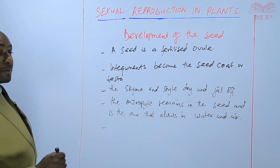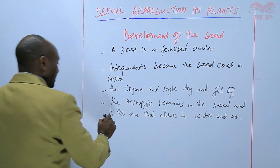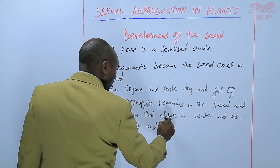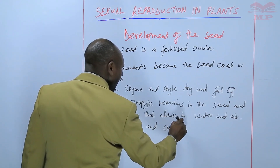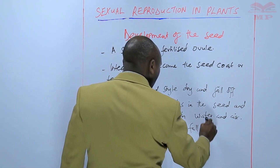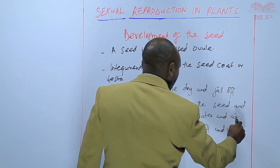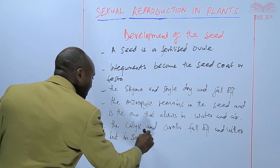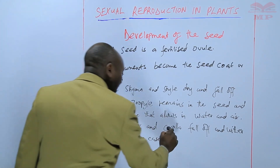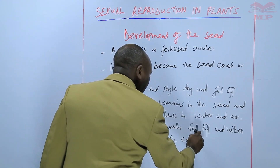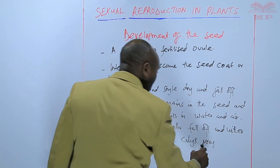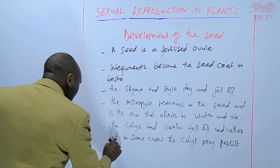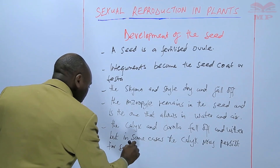Other parts of the flower, after fertilization — that means the calyx and corolla — fall off and wither. But in some cases, the calyx may persist or may remain for seed dispersal.